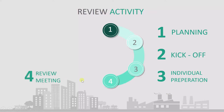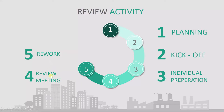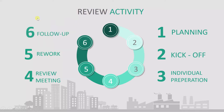The fourth activity is the review meeting. Once a person is ready with their preparation, they come to the review meeting where all the mistakes found are discussed and given to the author who wrote that document. The author then performs rework to fix all the defects found in the review process. After that, there is a follow-up process to verify that whatever defects were found have been fixed.